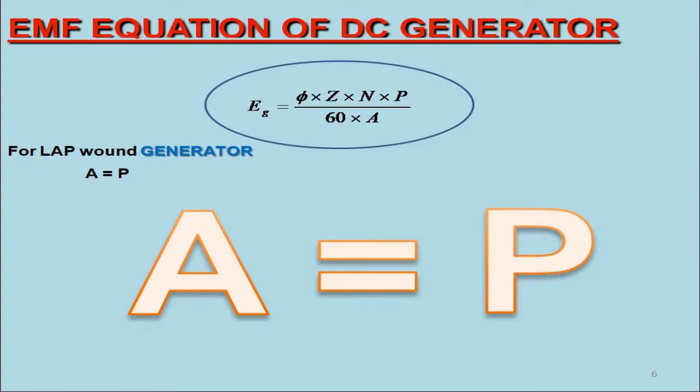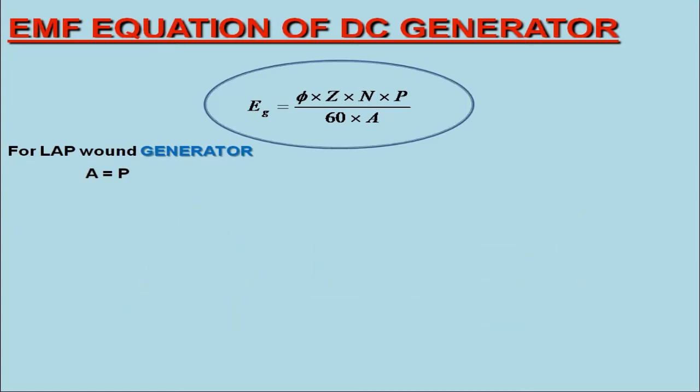When A = P, we may express the EMF equation for lap wound generator as φZN/60.